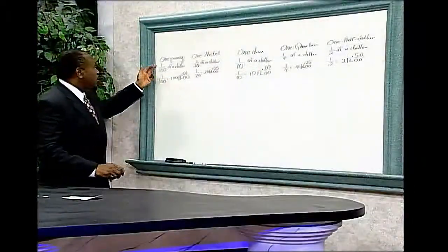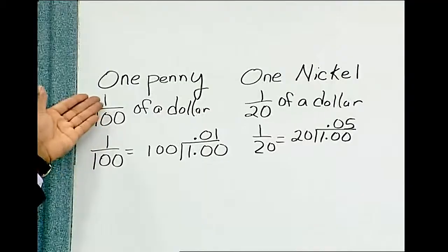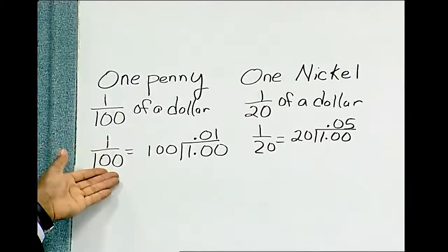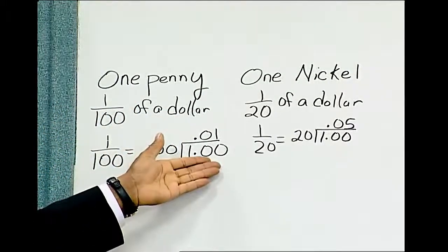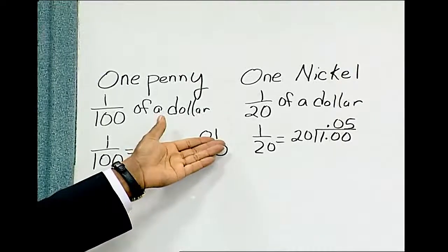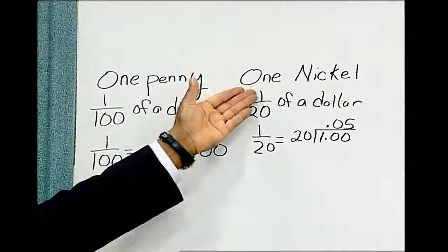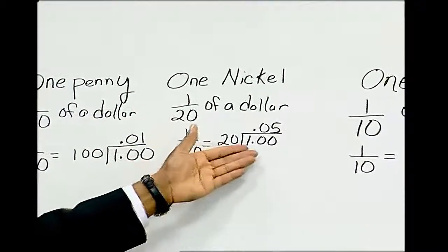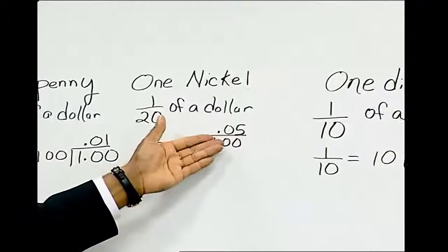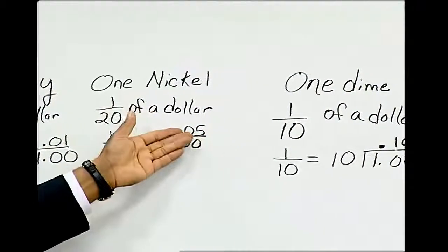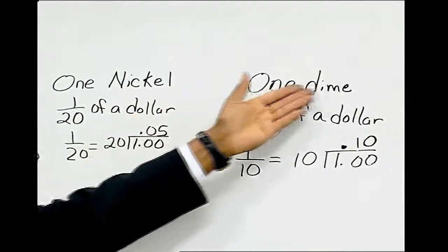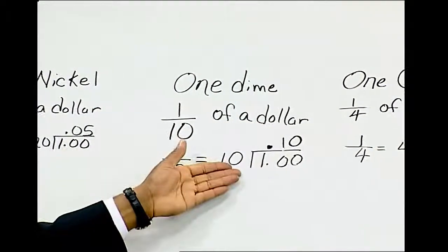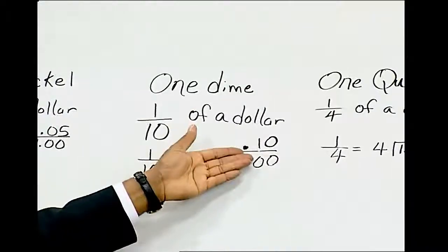Another way to illustrate this: one penny is equivalent to 1/100th of a dollar. 1/100 — divide 100 into 1 dollar — is equal to 1 cent. One nickel is equivalent to 1/20th of a dollar. 1/20 — divide 20 into 1 dollar — is equal to 0.05, or 5 cents. One dime is equivalent to 1/10th of a dollar. 1/10 — divide 10 into 1 dollar — is equal to 10 cents.